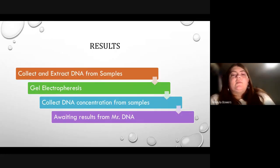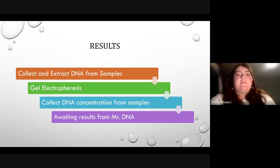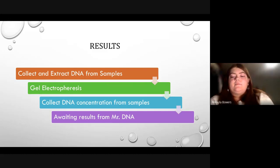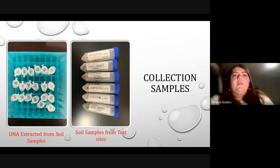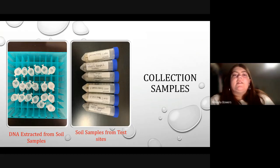As previously stated, my results were collected and identified in a series of steps, listed in a flowchart format to indicate the order they were performed. For the results, collection of the samples involved placing soil in sterile collection tubes and labeling them according to the date, site name, and which soil type it was. An example of this can be seen in the second photo. The next step was DNA extraction, in which the DNA kit's substances were used to homogenize and extract DNA from the soil samples, which was then stored in collection tubes.